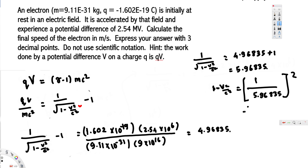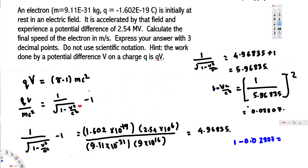Squaring gives us 0.02807. Rearranging further, we bring this to the other side: 1 minus 0.02807 equals v squared over c squared. This gives us 0.97193, and we then multiply by c squared.